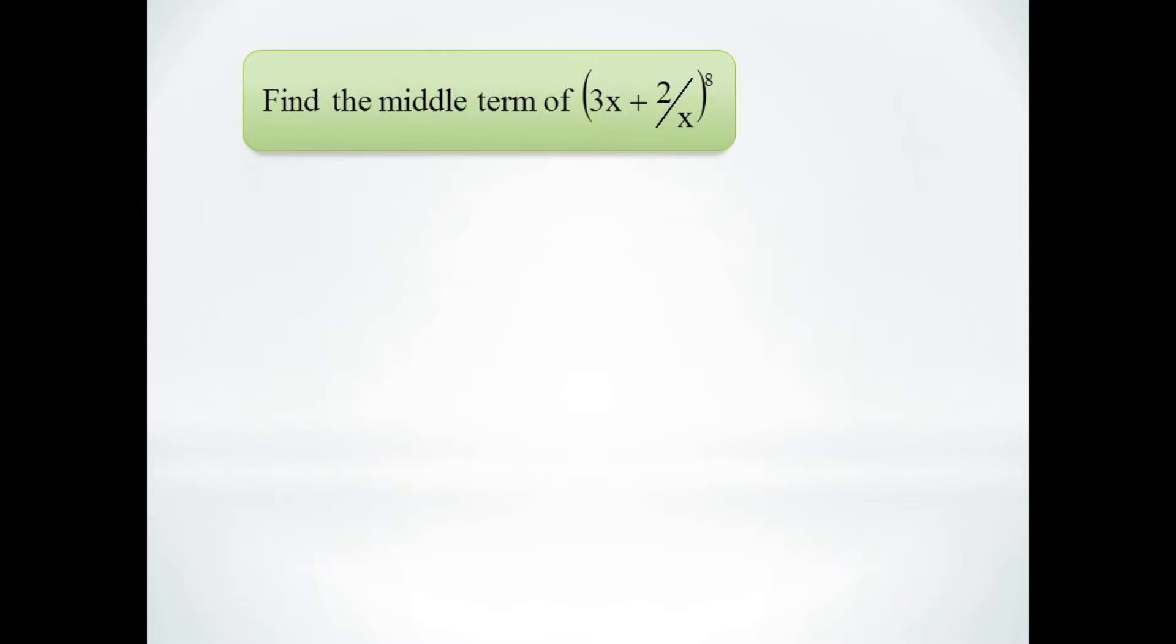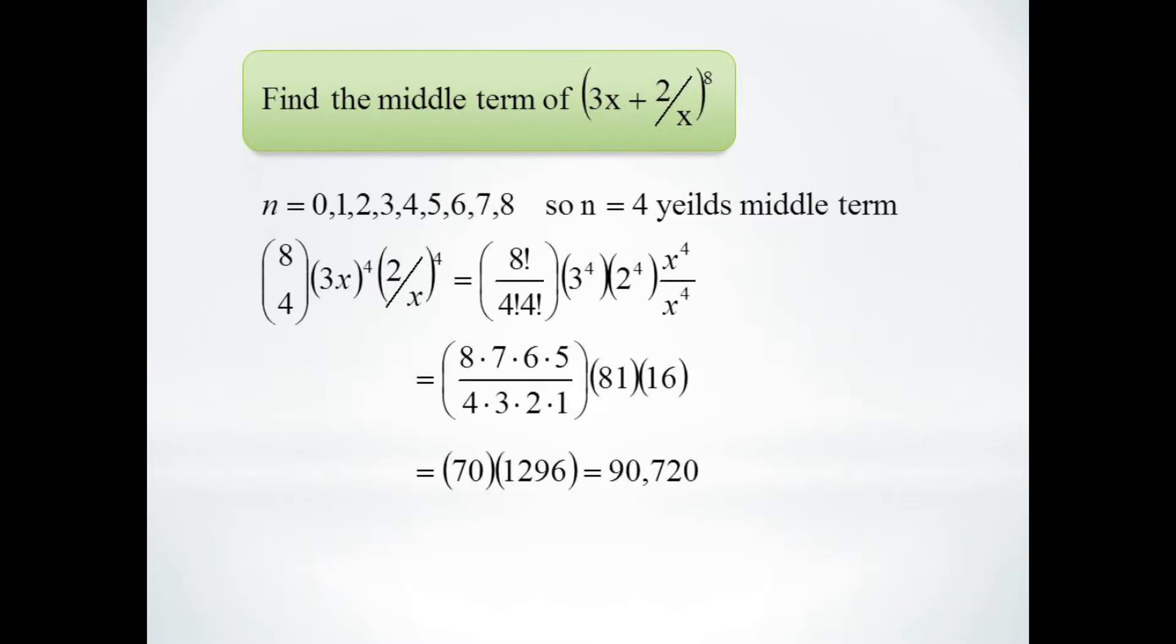This next problem is similar. We wish to find the middle term of 3x plus 2 over x to the 8th power. Our index i goes from 0 to 8, so the middle term corresponds to i equals 4.